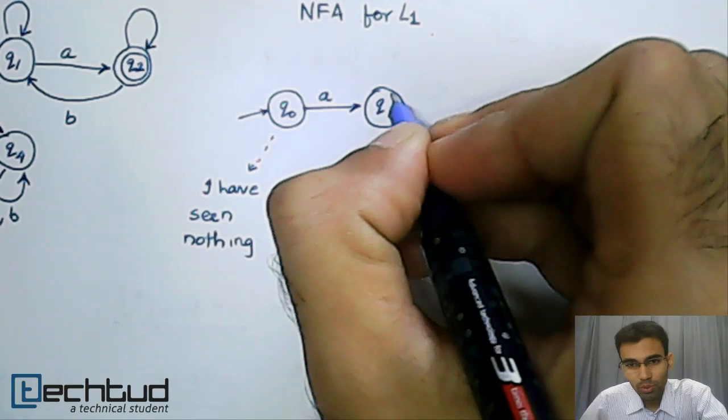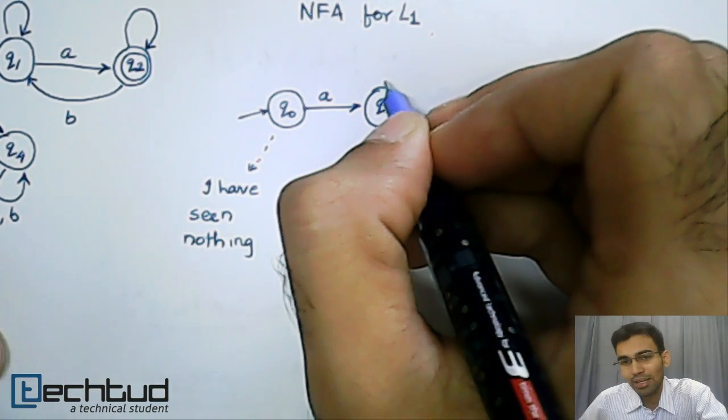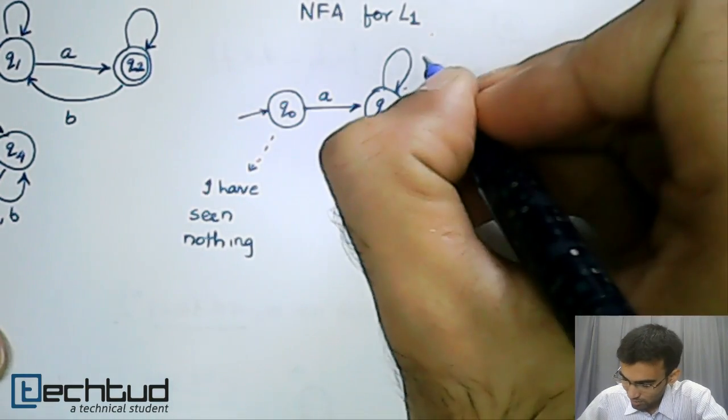On Q1, I have seen one A in the beginning, so I don't care as now I can have A's or B's. If I have a B, I am still okay as long as I don't mark Q1 as a final state.